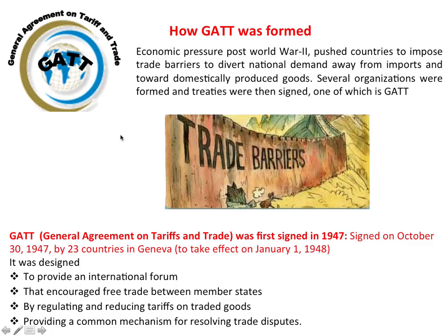GATT stands for General Agreement on Tariff and Trade. After World War II, economic pressure pushed countries to impose trade barriers to divert national demand away from imports and towards domestically produced goods, causing a recession that made trade between countries difficult. GATT was formed in 1947 in Geneva, Switzerland, designed to provide an international forum that encouraged free trade between member states. There were 23 member states at the time of its formation.